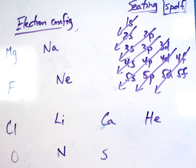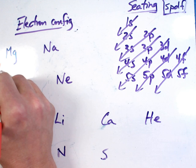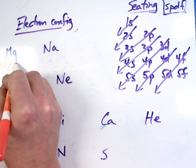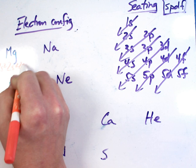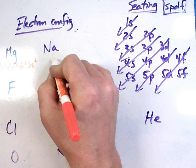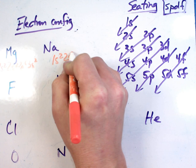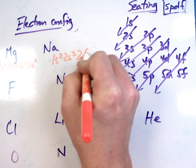Alright, let's see how you did. I'm going to move through these quickly because I do them a lot, so I'm a little bit faster. But let's see what you get. Magnesium, you should have had 1s2, 2s2, 2p6, 3s2. Sodium, 1s2, 2s2, 2p6, 3s1.